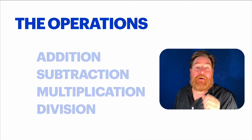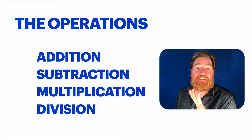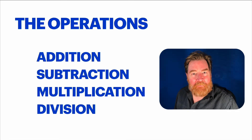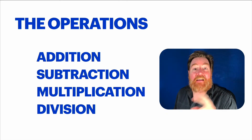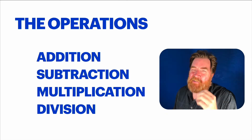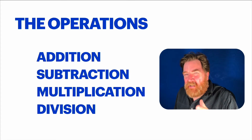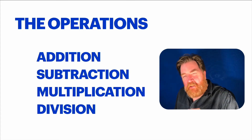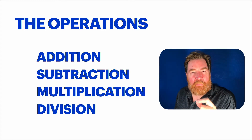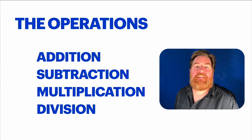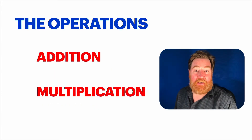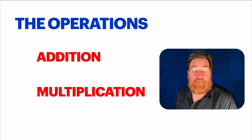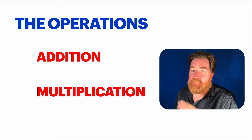Now the first thing you need to know about the four operations is that there aren't four. Someone's been fooling you this whole time. There are two. Turns out subtraction is really addition, and division is really multiplication. We'll talk more about what that means in a second, but you should know there are two operations: addition and multiplication. That's it.